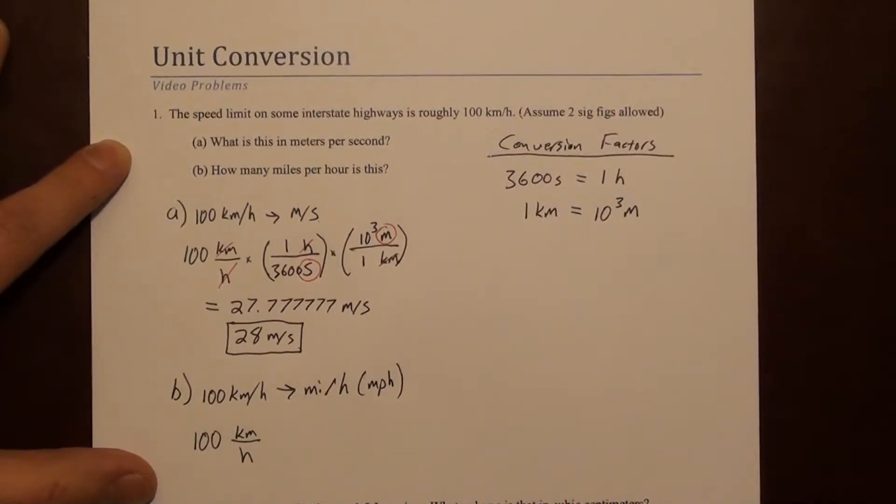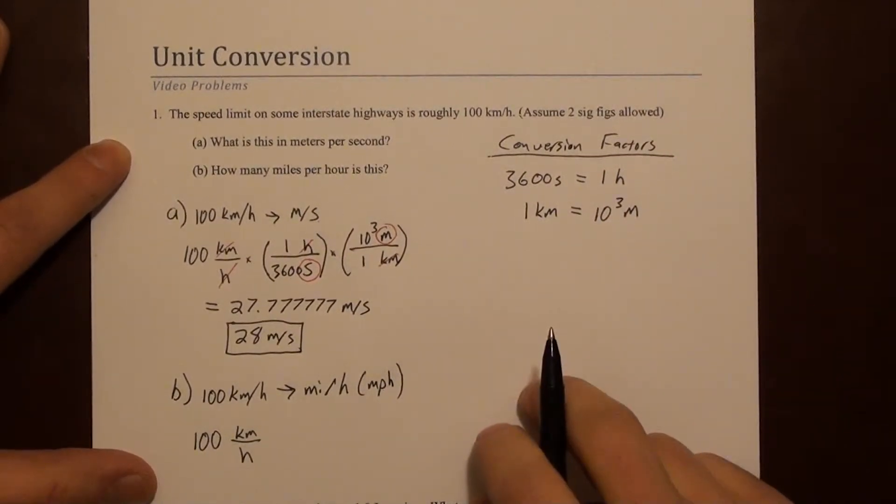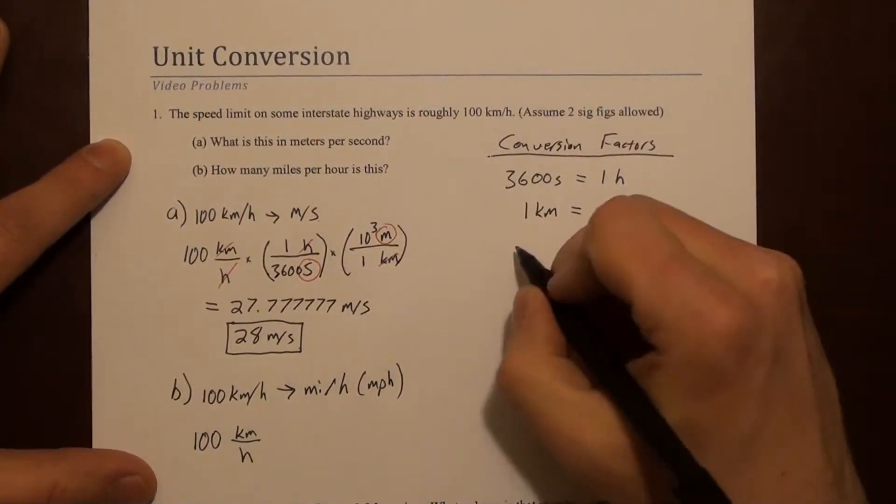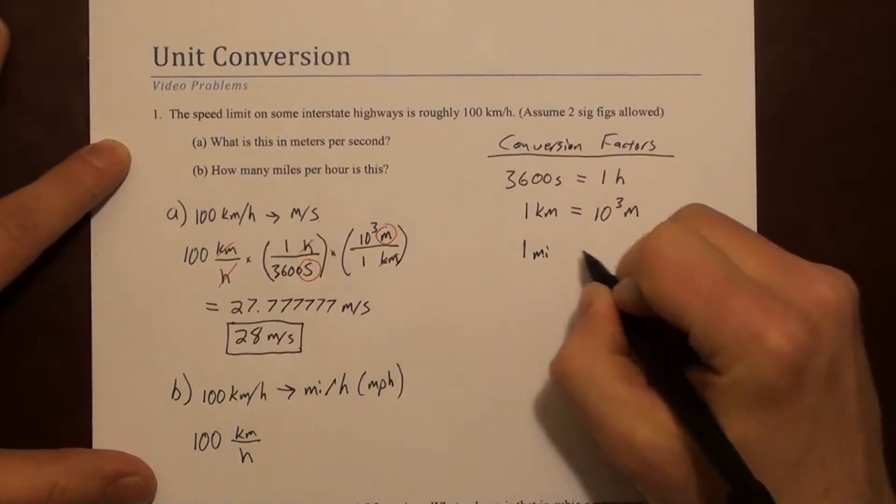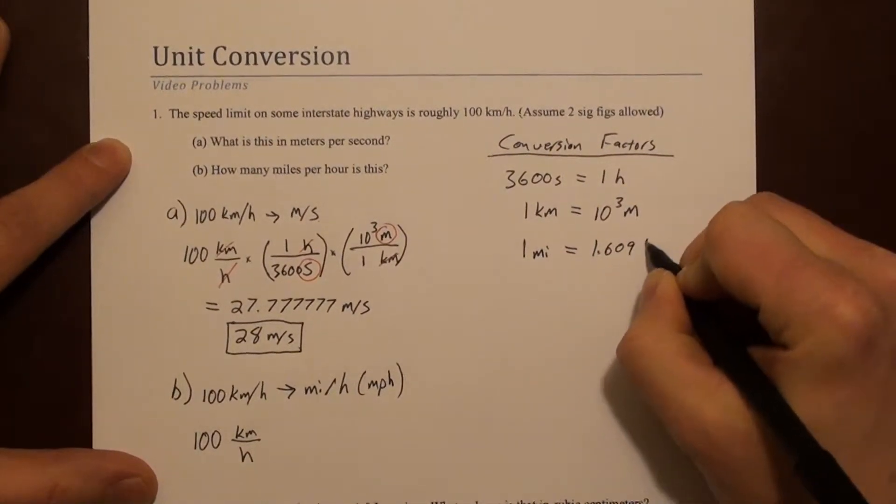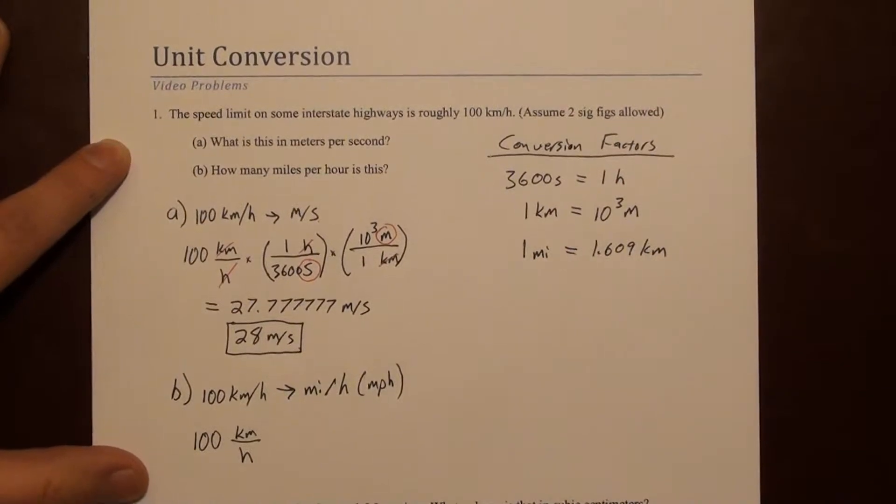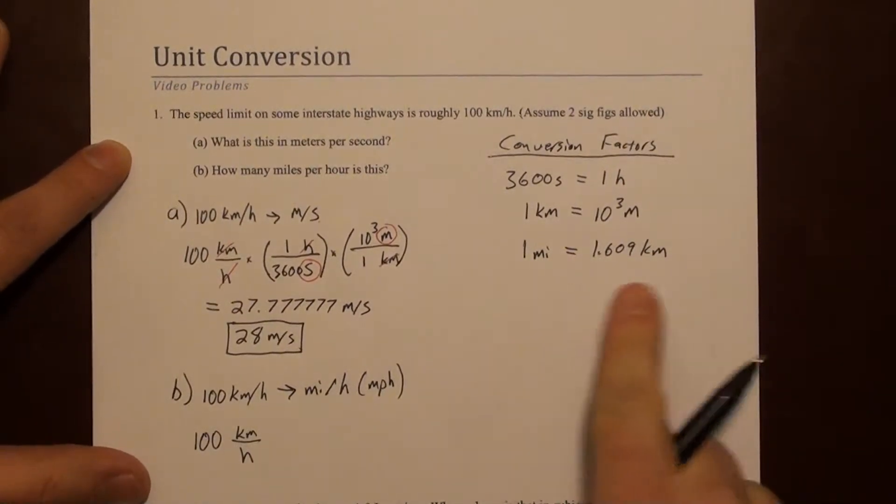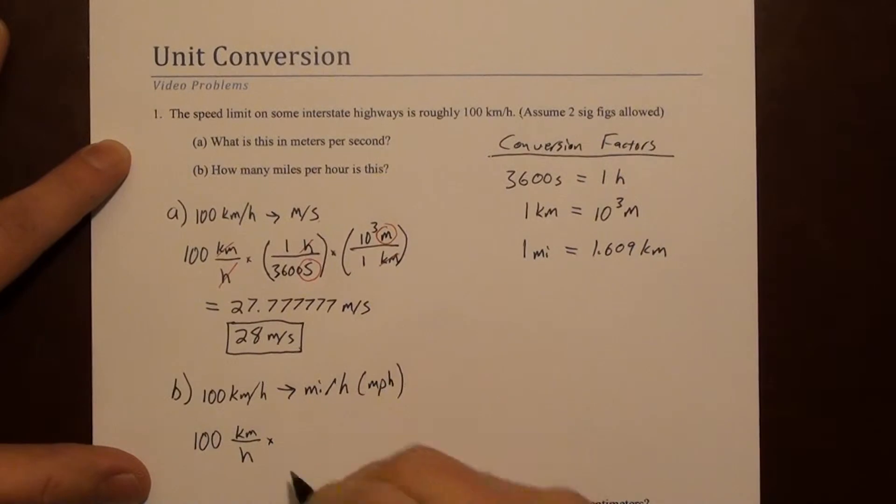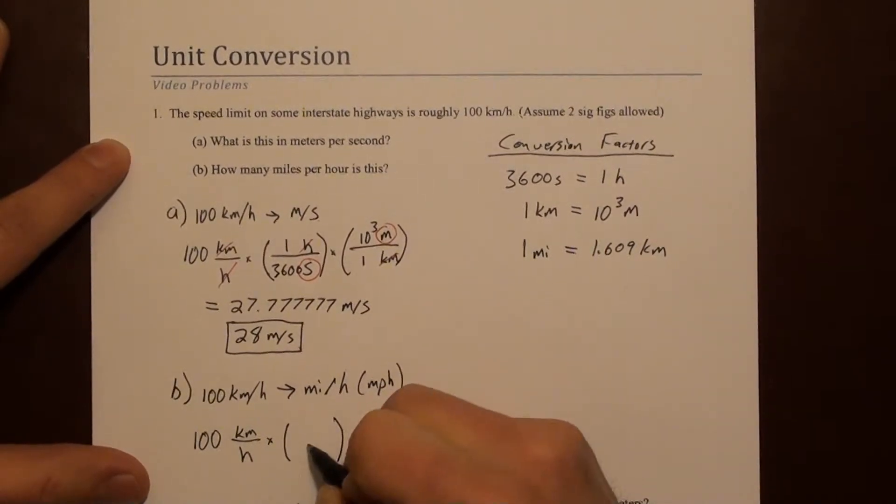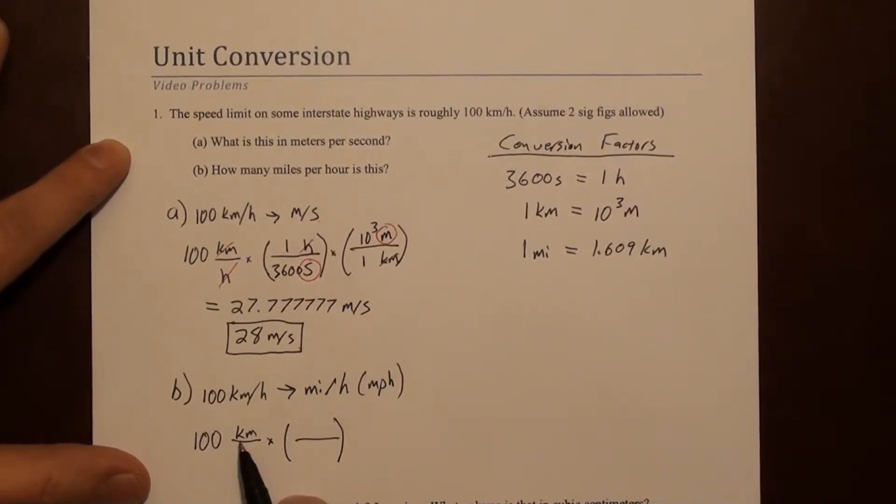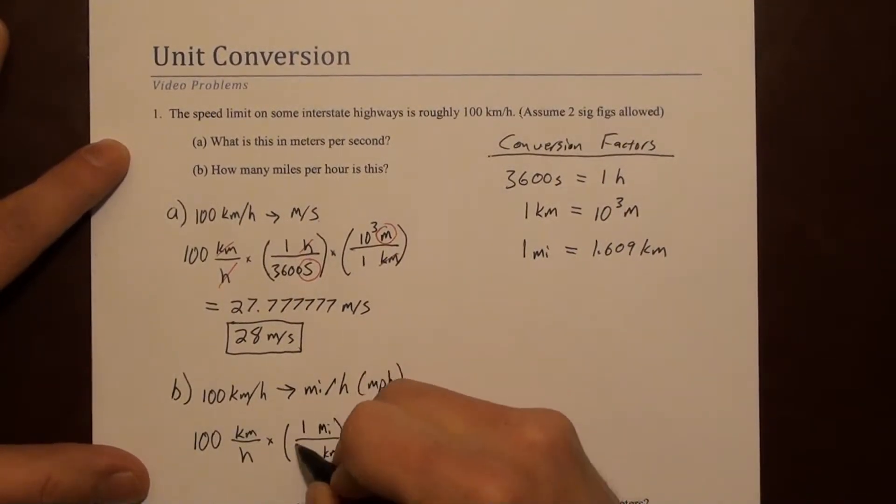And you may actually remember this conversion directly. One mile is 1.609 kilometers. That's not the only way to do this, but if you remember this, it looks like we can do this in one step. So we'll fill in our fraction. We want kilometers to go away. It goes downstairs. We want miles to show up, so we say miles here. And then we say one mile is 1.609 kilometers.